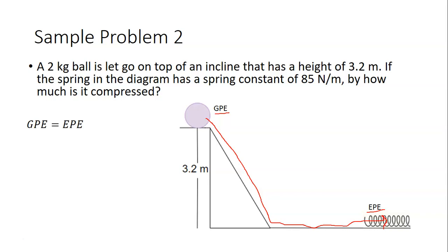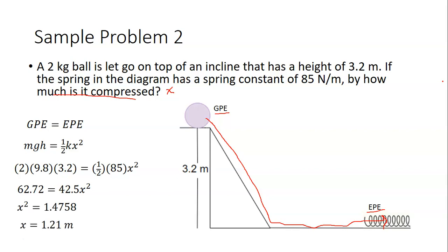Now we can go ahead and plug in the formulas for each of those types of energy. We'll have mgh equals ½kx². We are looking for how much it is compressed, so that's going to be x. We can plug in numbers for our other values. m is 2, g is 9.8, h is 3.2, and k is 85. On the left-hand side, it'll be 62.72, and on the right-hand side equals 42.5x². Divide both sides by 42.5, and then take the square root of both sides, and you'll get that x is equal to 1.21 meters.